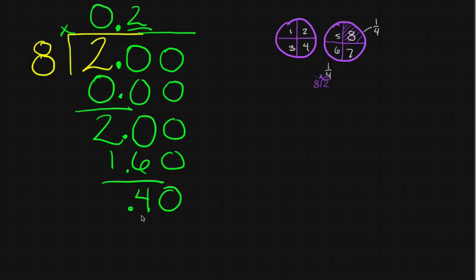All right, so now I'm looking at the hundredths place. How many groups of eight can I take out of 40? And the answer is 5. Five times eight is 40. And there it goes. No remainder left. The answer is twenty-five hundredths.